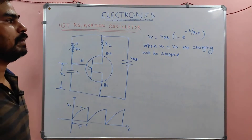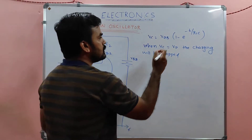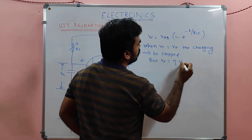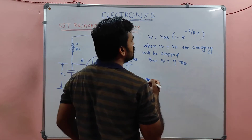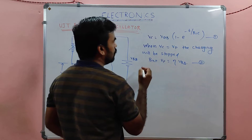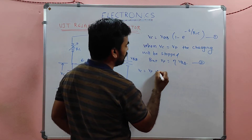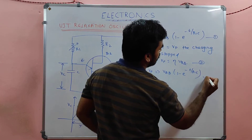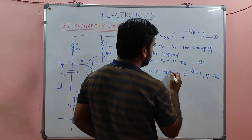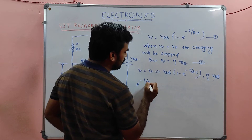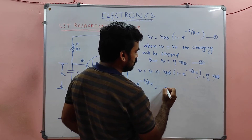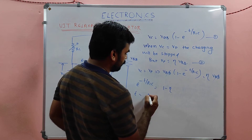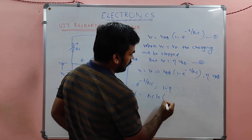When VC equals VP, the charging stops. VP is equal to η·VBB. Setting VC = VP gives: VBB × (1 − e^(−T / R1C)) = η·VBB. VBB cancels from both sides, giving: e^(−T / R1C) = 1 − η. Solving for T: T = R1·C · ln(1 / (1 − η)).